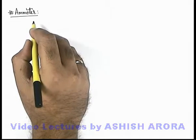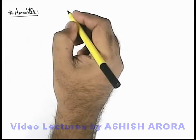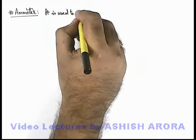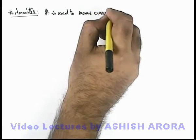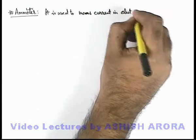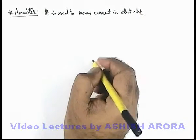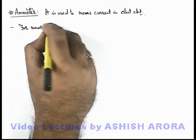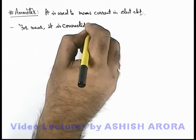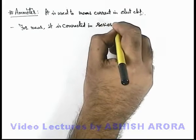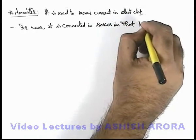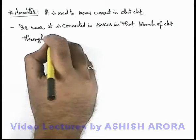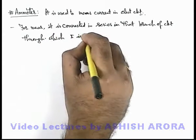Now let us study about an ammeter. About ammeter, I hope in your early classes you've already studied that it is used to measure current in electrical circuits. And about ammeter we can write down a few facts. For measurement of electrical current, it is connected in series in that branch of the circuit through which current I is to be measured.